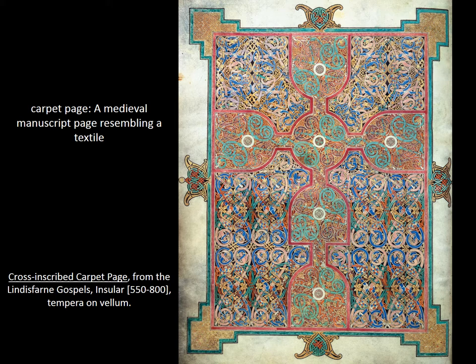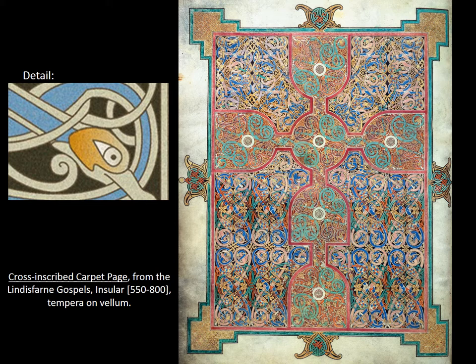This is another element of Gospel books that I think is particularly fantastic — it's called a carpet page, named because it looks like a textile. These are remarkable. If you look closely, you can see all of the different intertwining lines. They are perfectly constructed; the amount of planning that went into producing this and then actually making it is remarkable. They also have little animals in them. Here's a detail where you can see them, and now that you've seen the detail, you can pick out the little heads throughout. It looks like swirling snakes inscribed by the thick lines of the cross. Every Gospel book would start with an image of the Gospel writer and then this carpet page.